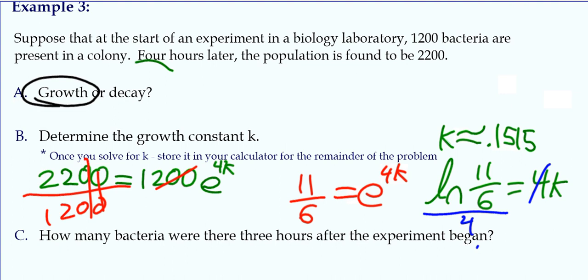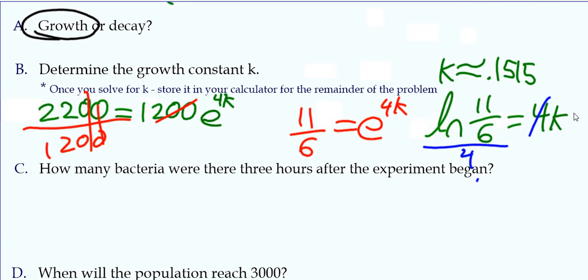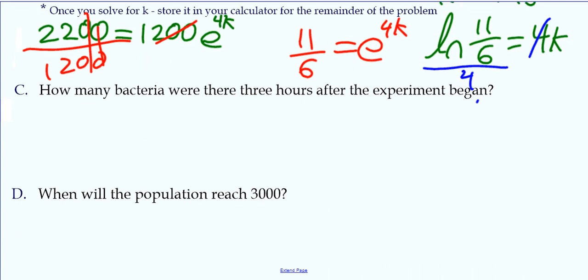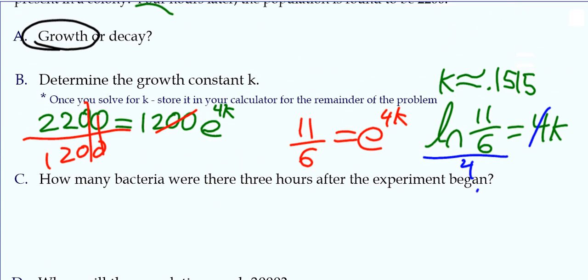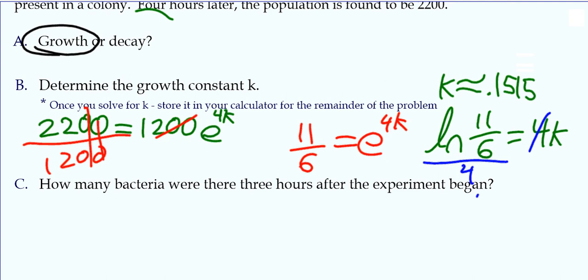So now that we have that decimal, which was close to 0.1515, stored for k in our calculator, to figure out how many bacteria will be left after three hours, I'll just use our equation. N equals N naught E to the kT. And T is three hours, so plug in three. Now, I'm just going to write k here, because I don't want to write that big, long decimal. I'm just going to write k, because we already know what k is. It's stored in our calculator.